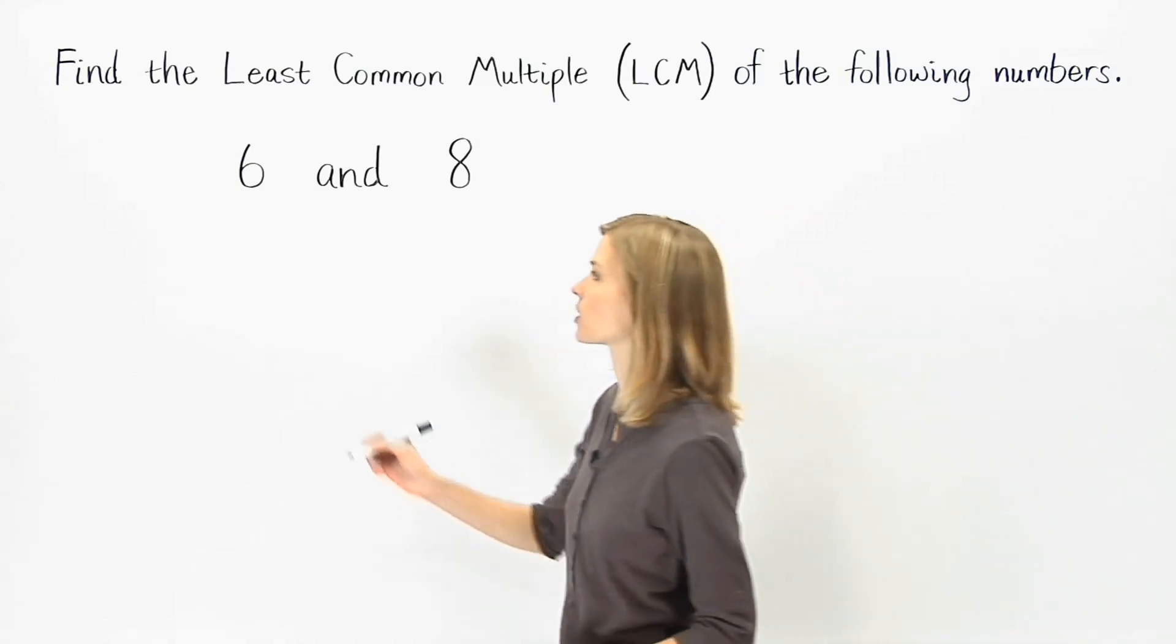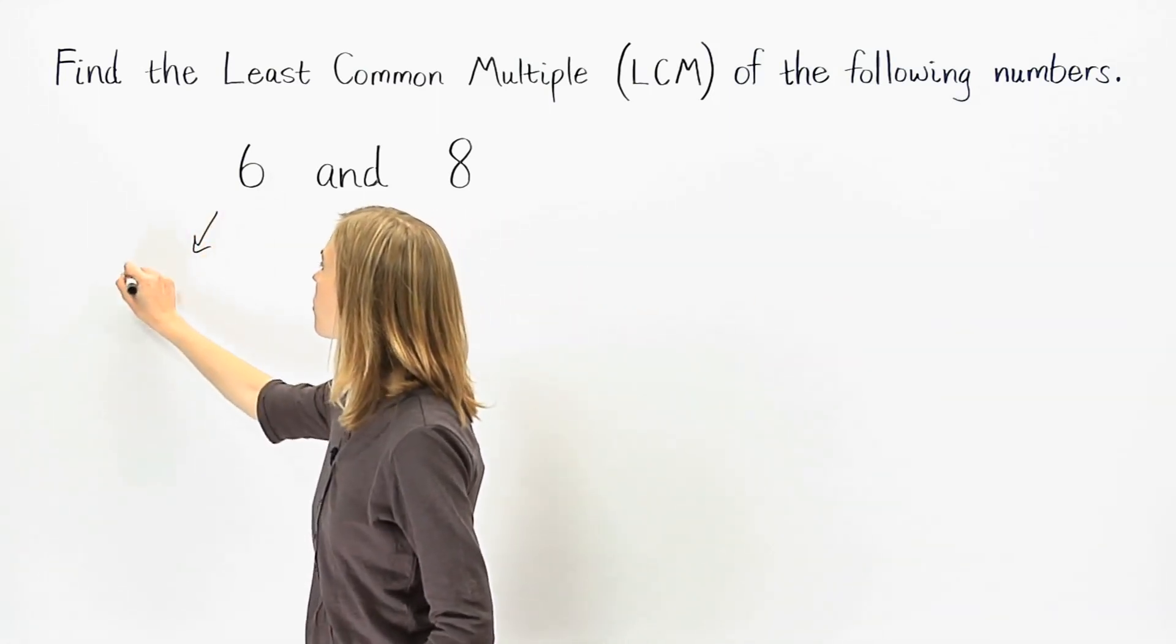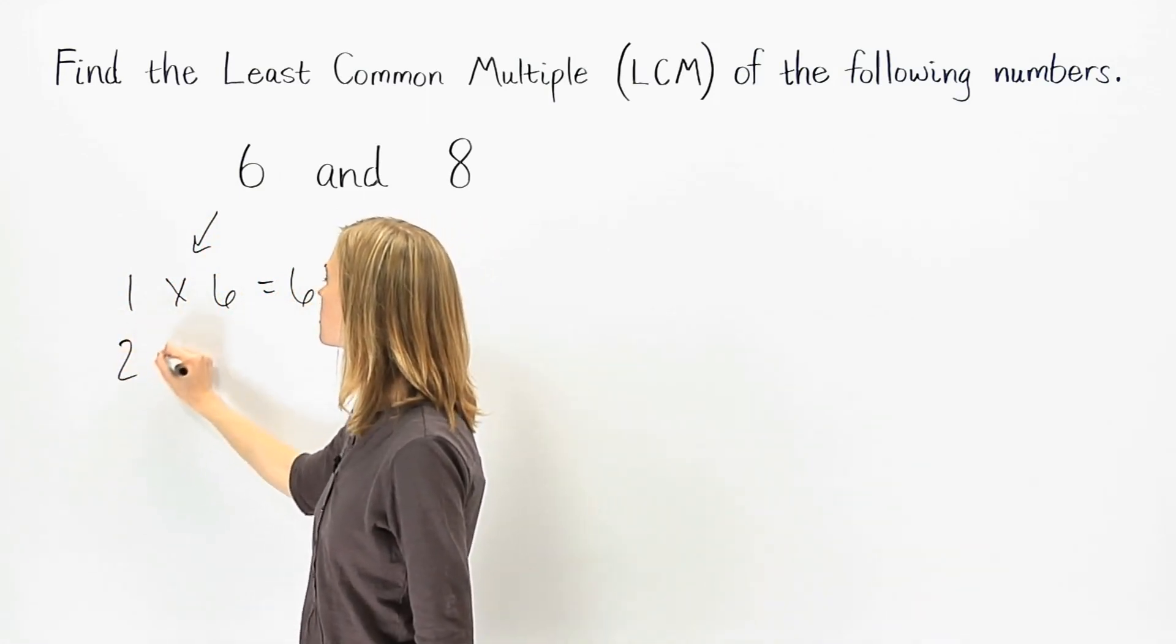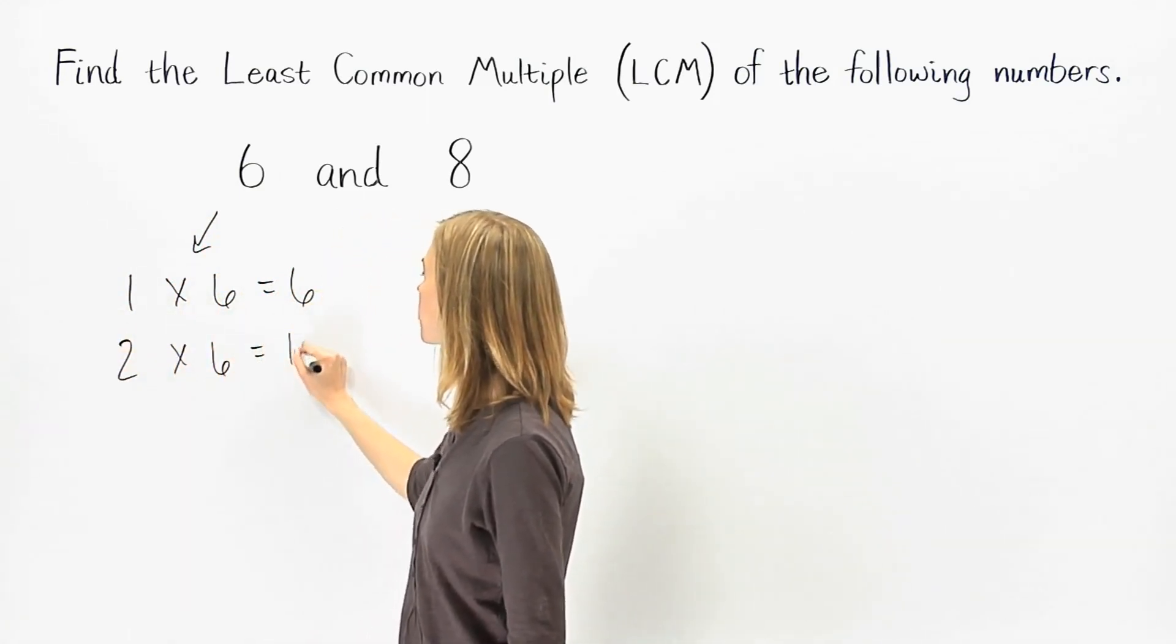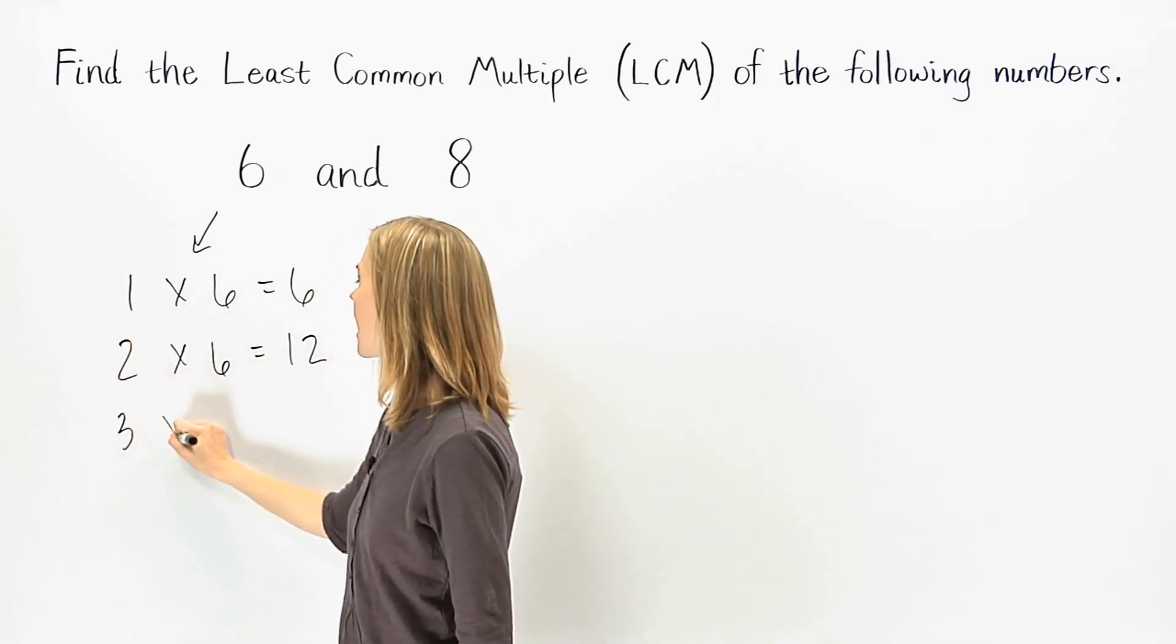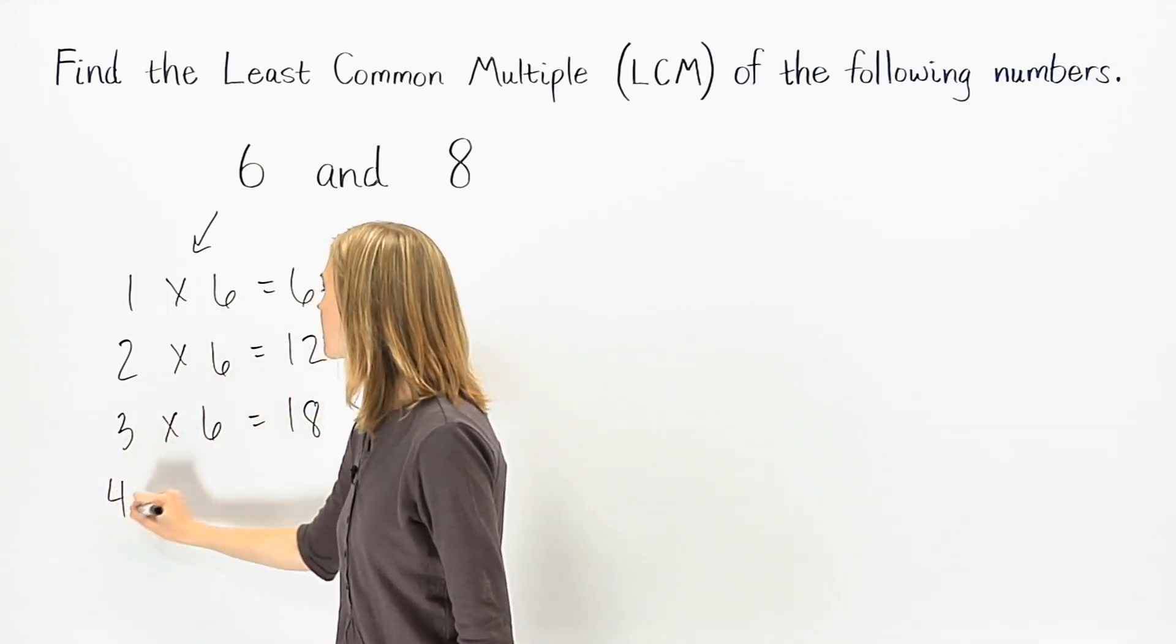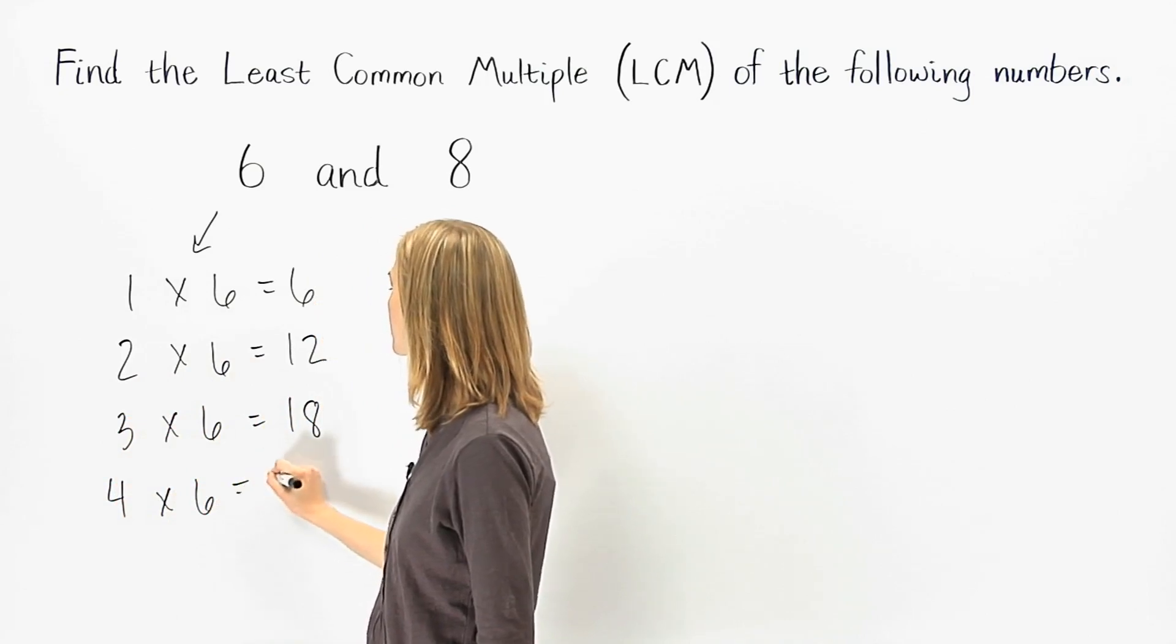The multiples we list for 6 are 1 times 6, or 6, 2 times 6, or 12, 3 times 6, or 18, and 4 times 6, or 24.